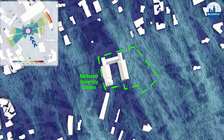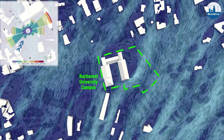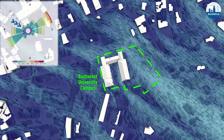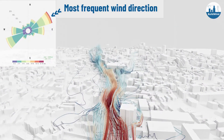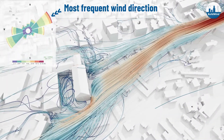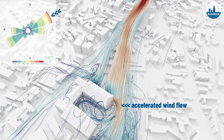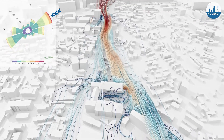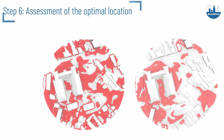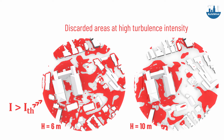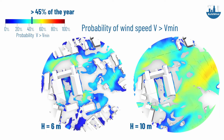Results are then analyzed in order to identify a set of suitable locations and heights for the installation of wind turbines. Suitable location conditions must guarantee a low turbulence intensity and a high enough wind speed for a sufficient number of days per year.